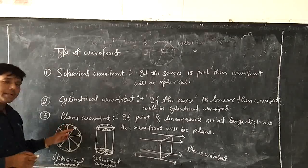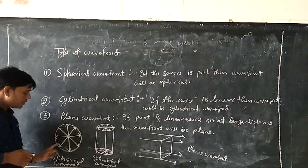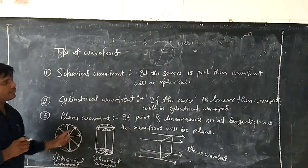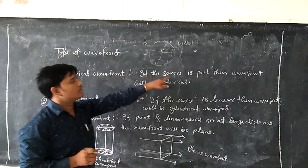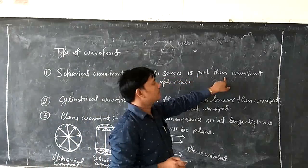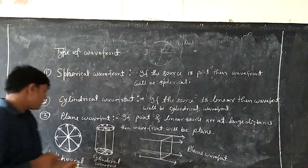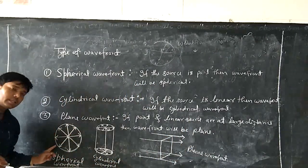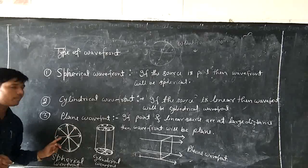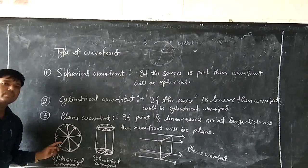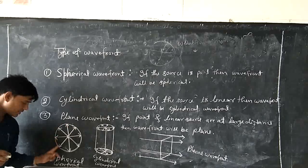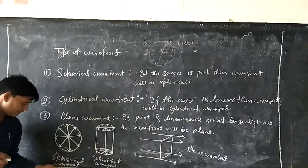And what wavefront do we get from this source? If the source is a point source, if the source is a point, then wavefront will be spherical. In this situation, this is the wavefront formed by a point source. This is called spherical wavefront.